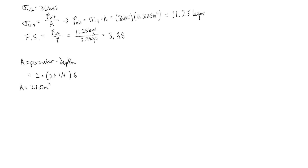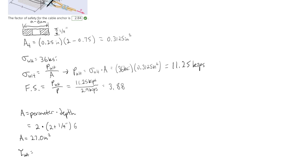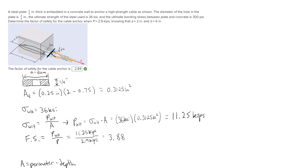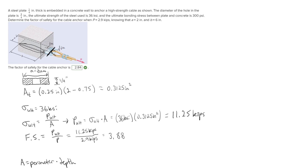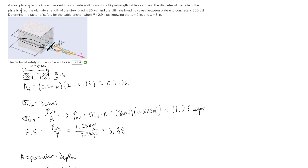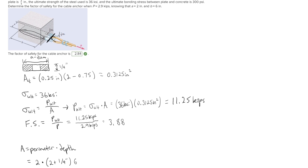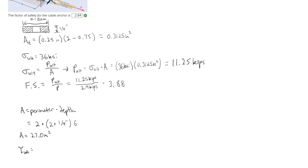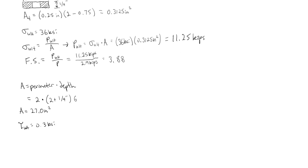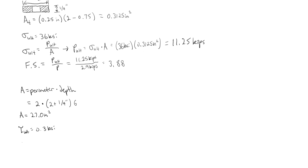Now we need to find the ultimate shearing stress, which is given in the problem statement as the ultimate bonding stress of 300 psi. Converting that to ksi gives 0.3 ksi. The formula for shearing stress is P ultimate over A.